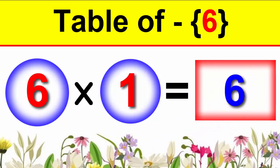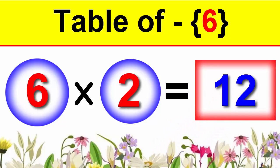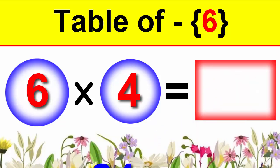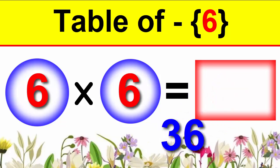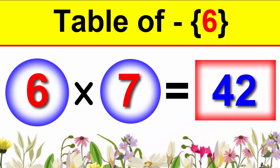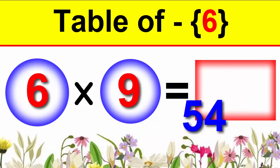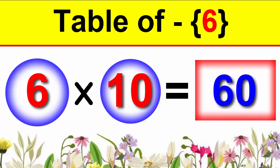6×1 is 6, 6×2 is 12, 6×3 is 18, 6×4 is 24, 6×5 is 30, 6×6 is 36, 6×7 is 42, 6×8 is 48, 6×9 is 54, 6×10 is 60.